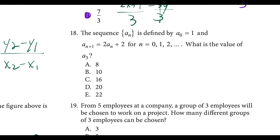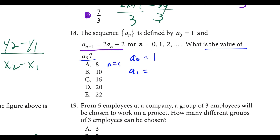Question eighteen: we have a sequence defined by a sub zero equals 1, and a sub n plus 1 equals 2 times a sub n plus 2. This is a recursive sequence, and we want the value of a sub 3. For recursive sequences, each term is built from the term before it. To find a sub 1, we use n equals 0: a sub 1 equals 2 times a sub 0 plus 2, and since a sub zero equals 1, that gives 2 times 1 plus 2 equals 4.